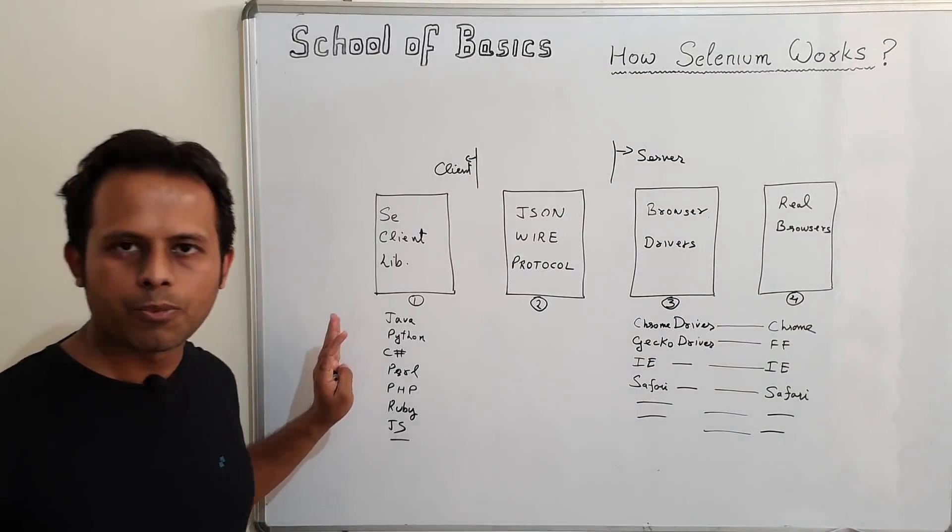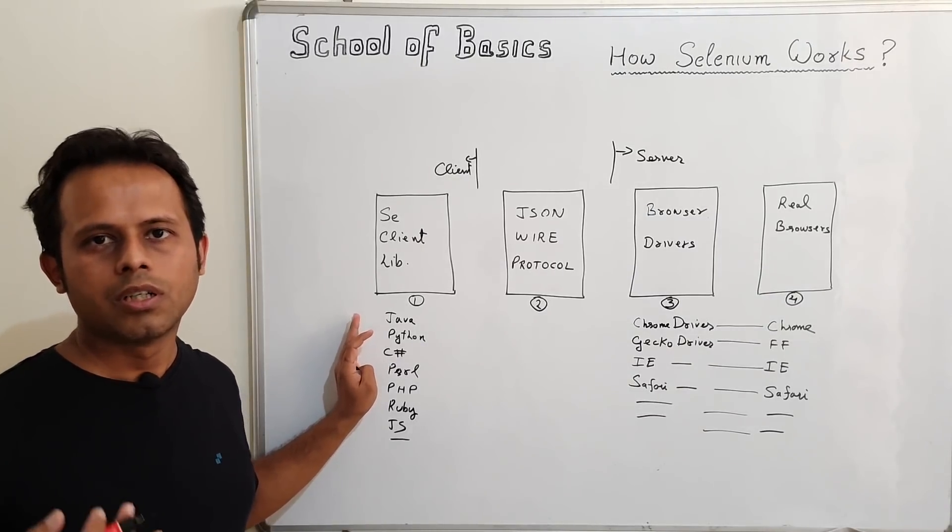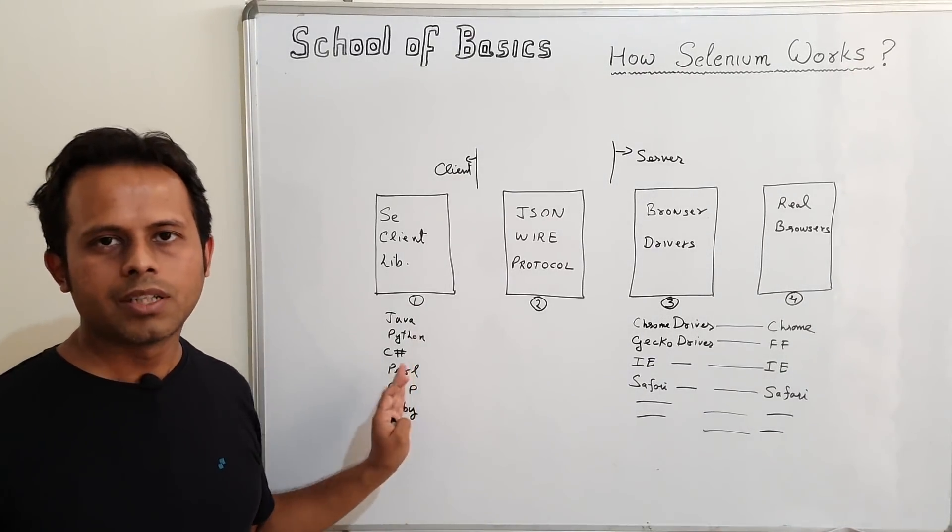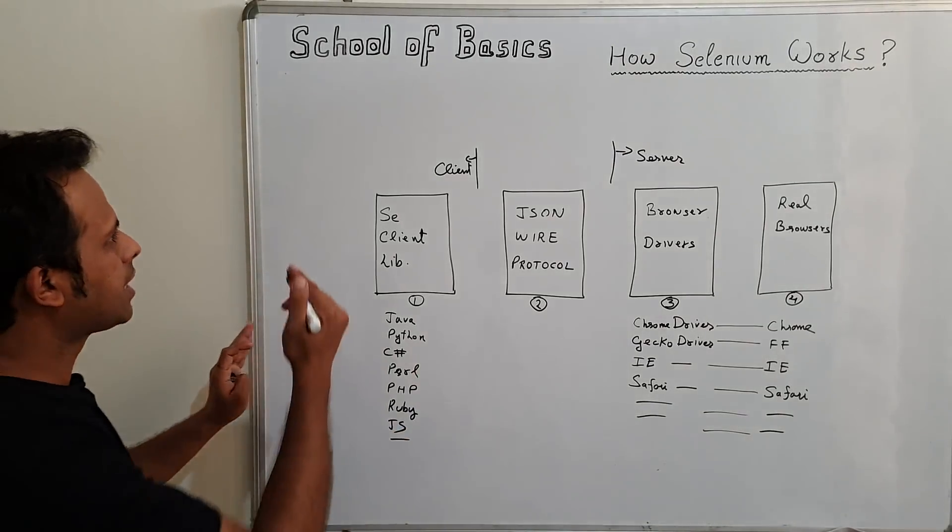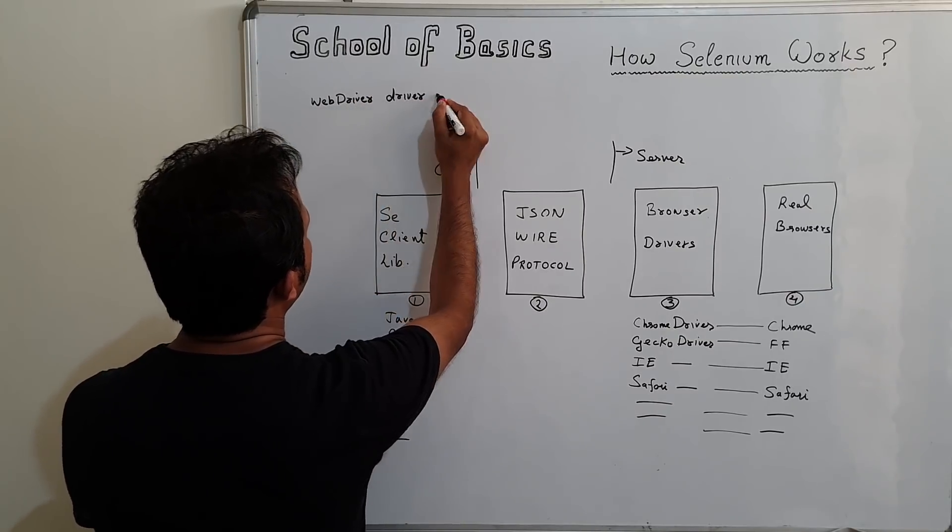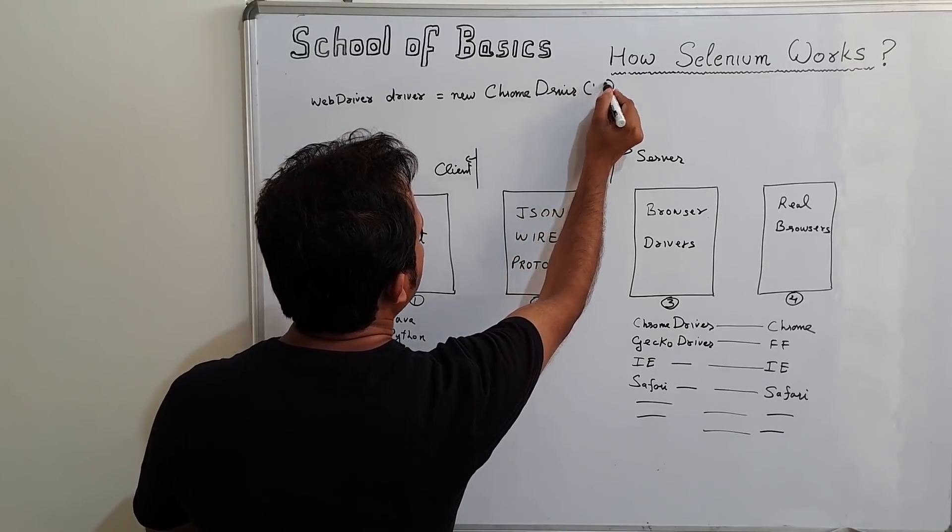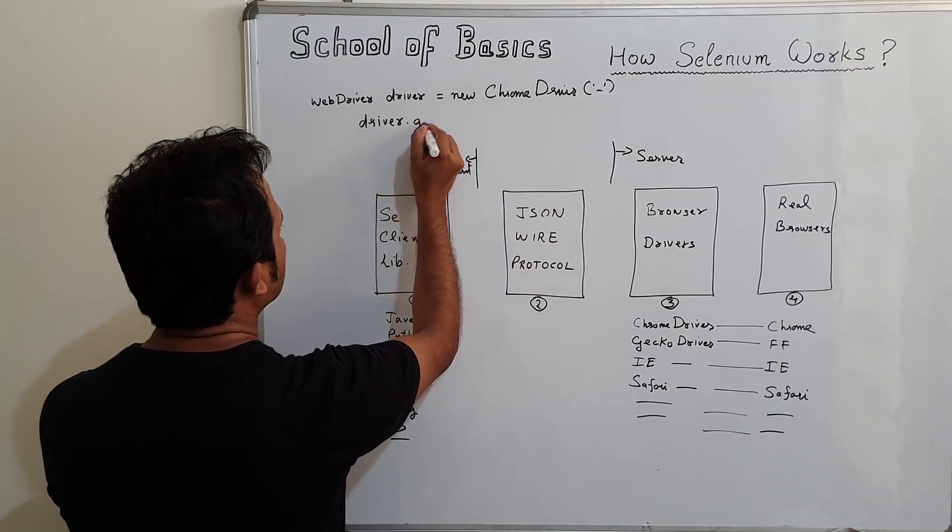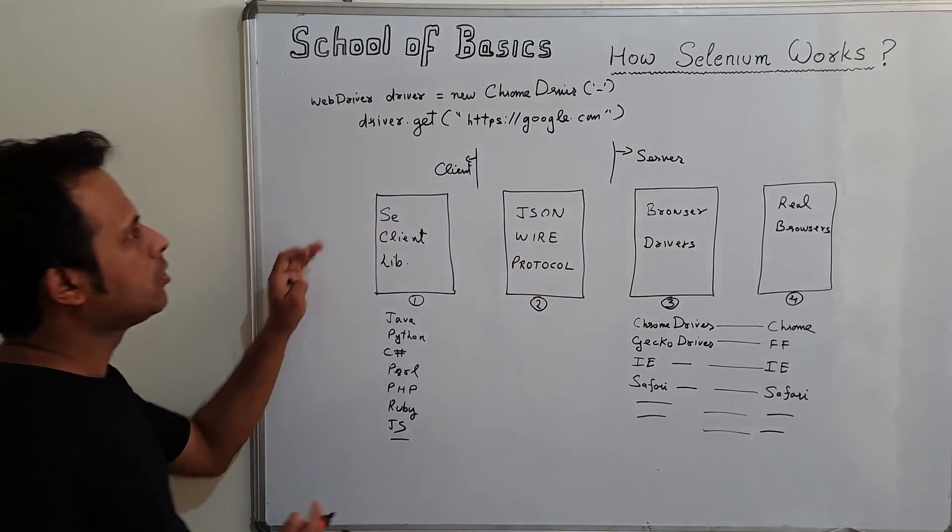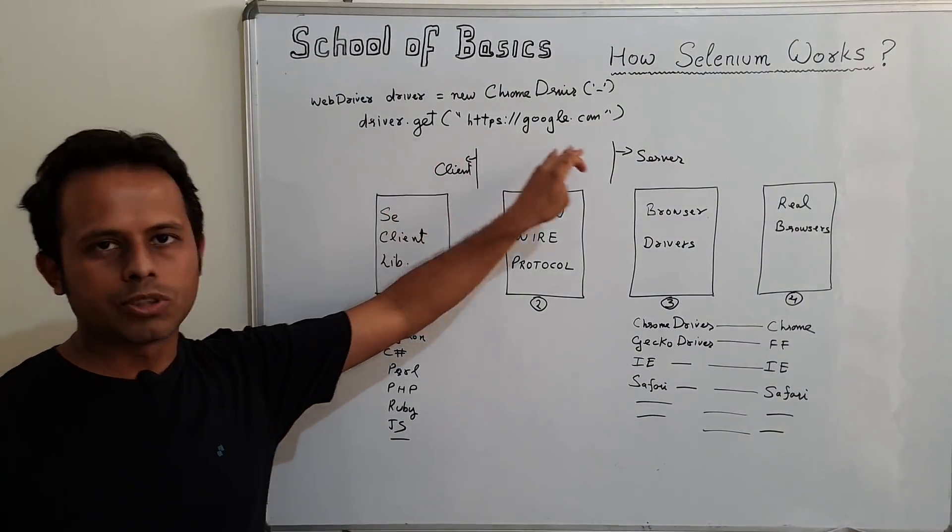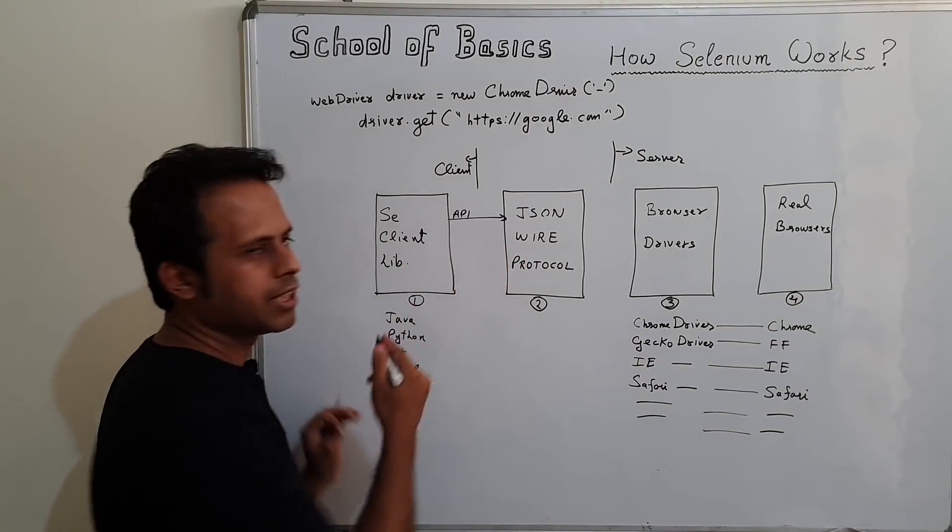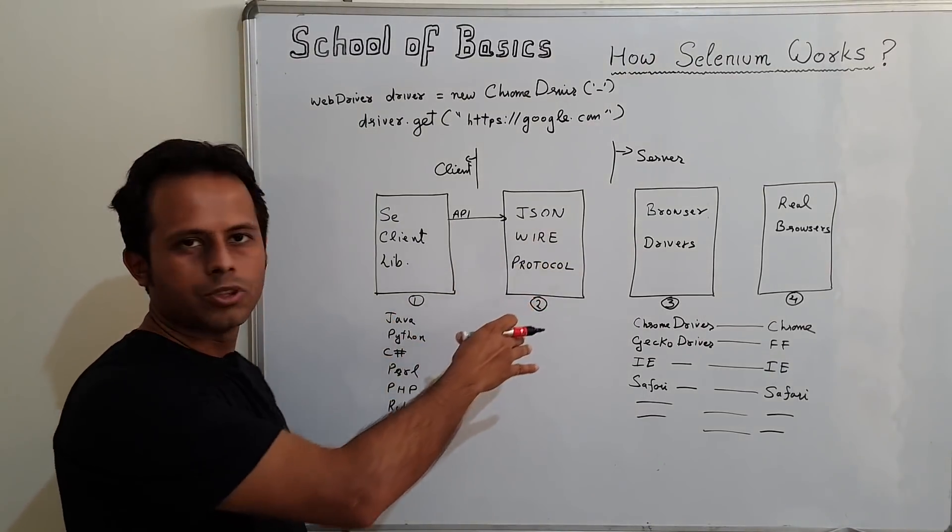Now how does the interaction take place and how does the information flow? Whenever you write your program or code for Selenium functions in your IDE like Eclipse or Visual Studio, you will run the program and that will convert the request and go to JSON wire protocol. For example, in our code we will say driver.get to some particular URL and this will go to JSON wire protocol.